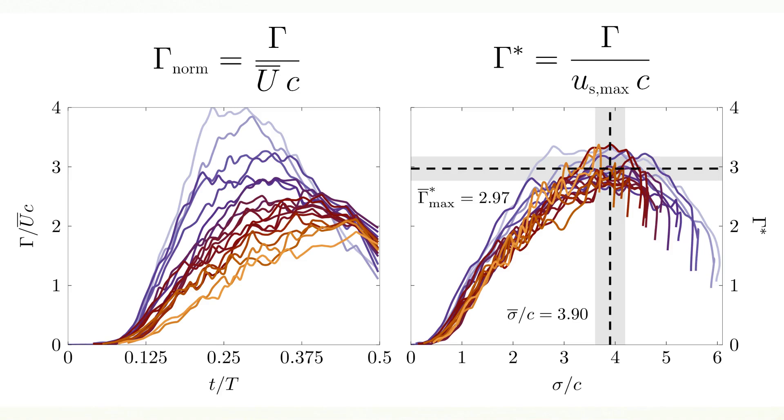For the most efficient kinematics, we can see that this cycle actually ends at a formation time of around four, which is consistent with other observations for bio-inspired propulsors, which have an optimal vortex formation.